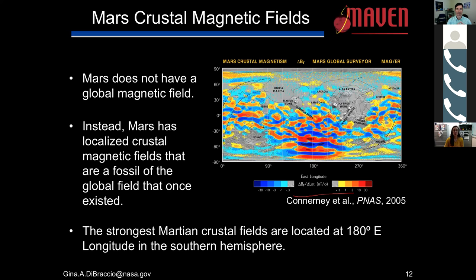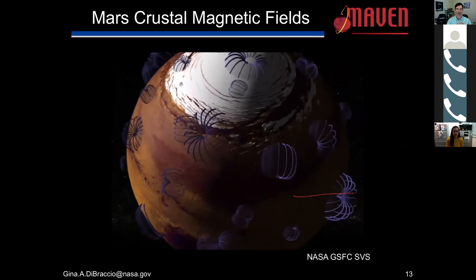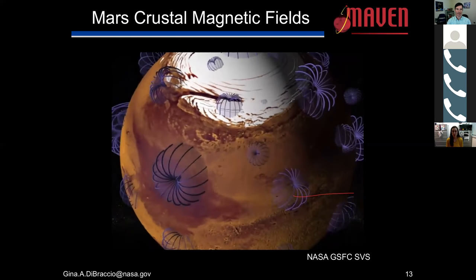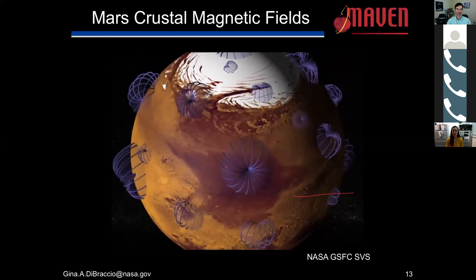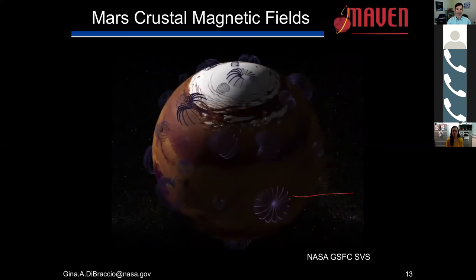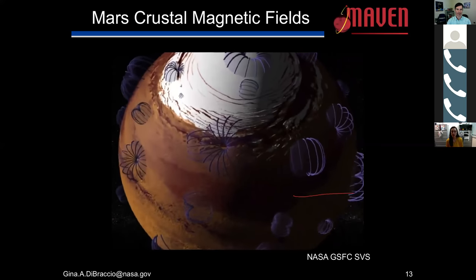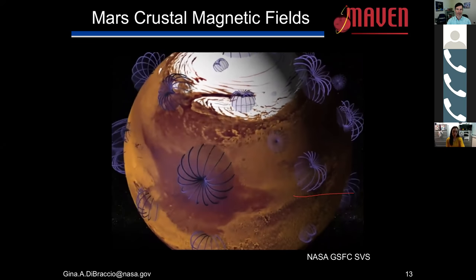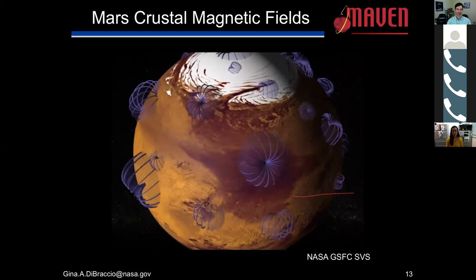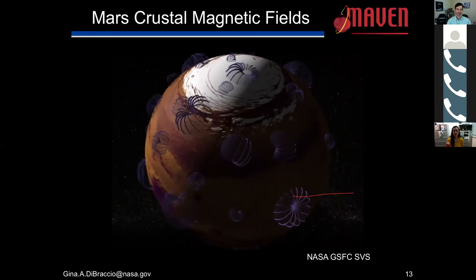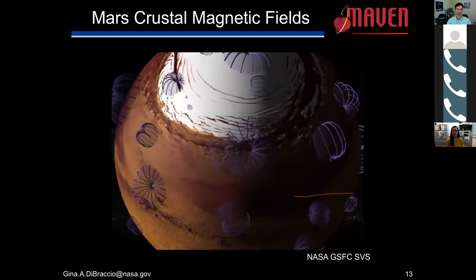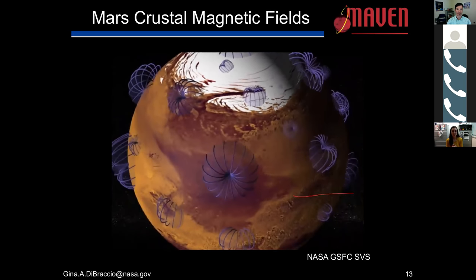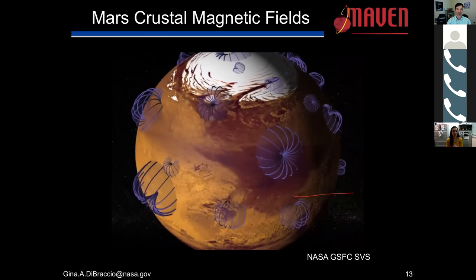This movie illustrates these crustal fields and how they rotate. The locations aren't exactly to scale, but it shows what it's like to have pockets and patches of magnetic field scattered along the surface — compared to Earth's global field. Different regions of the surface and atmosphere are protected by these crustal fields, and this changes that interaction with the solar wind.